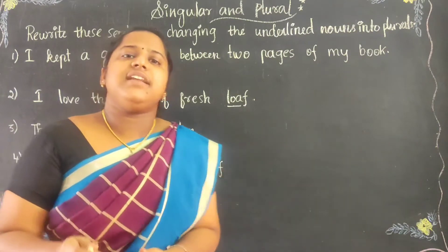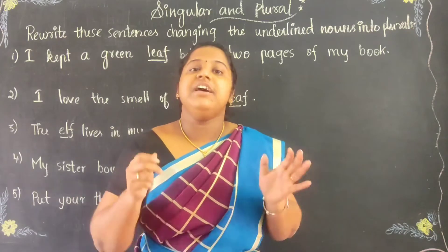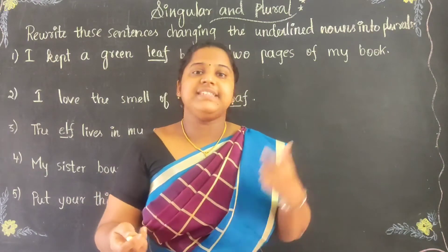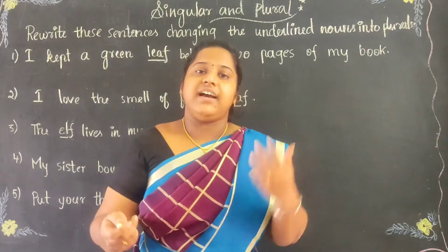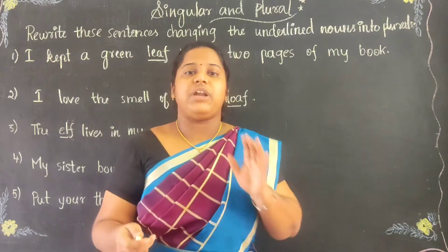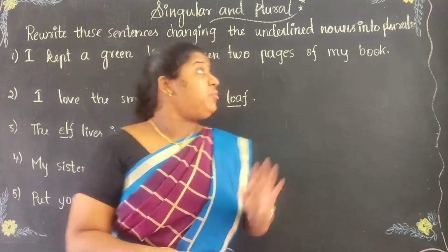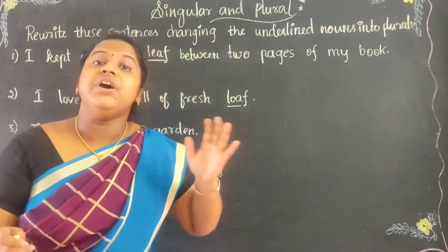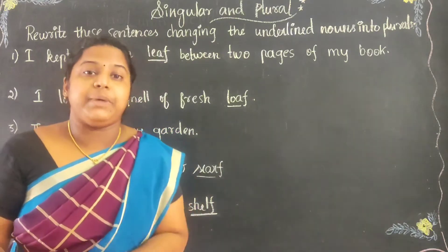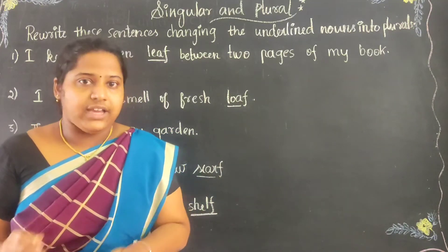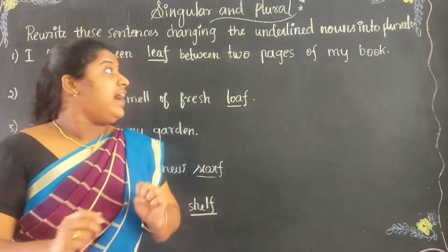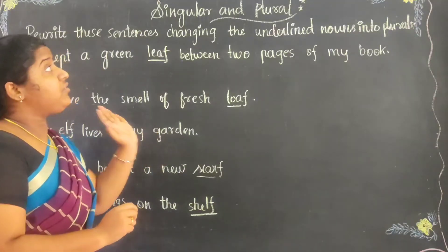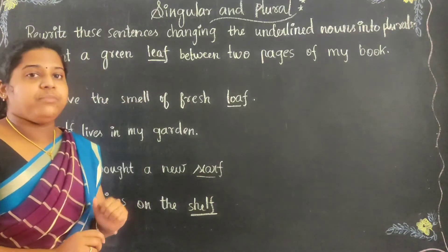What is a singular noun? A singular noun tells us about one person, one place, one thing. We can simply say it is only one. Then what is a plural noun? A plural noun tells us about two or more people, places or things.